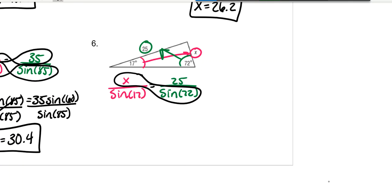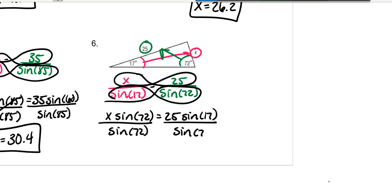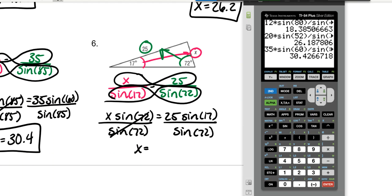Cross multiply. X times the sine of 72 is equal to 25 times the sine of 17. Divide both sides by the sine of 72. Put all that in the calculator. So 25 times the sine of 17 divided by the sine of 72. And that's 7.68, which is 7.7.